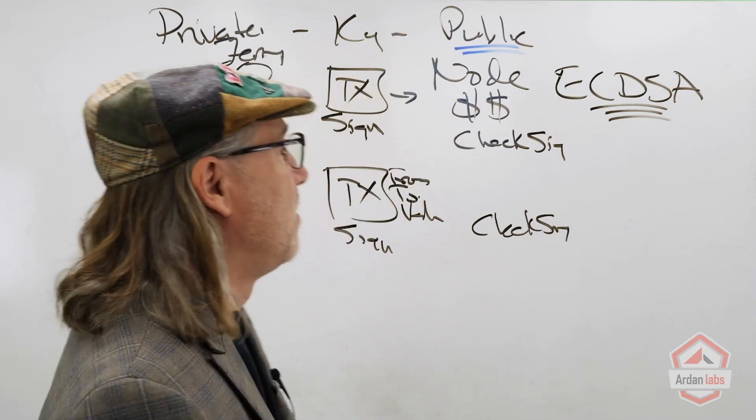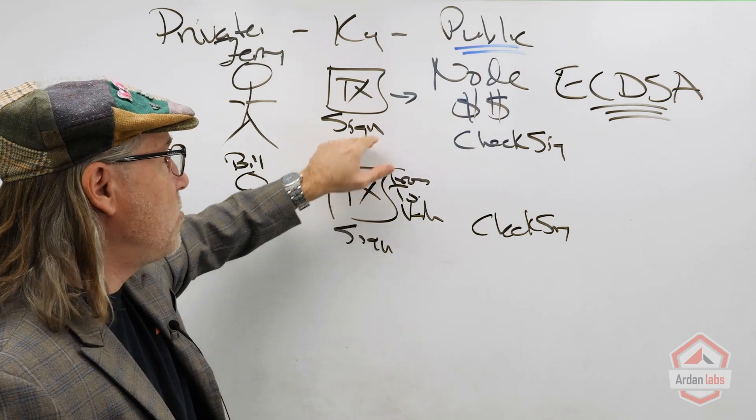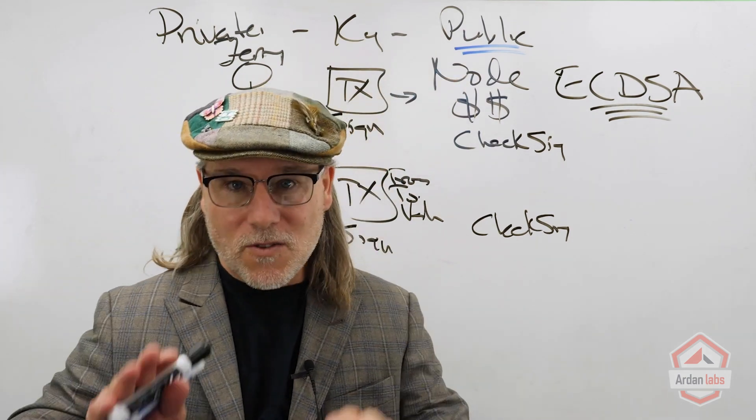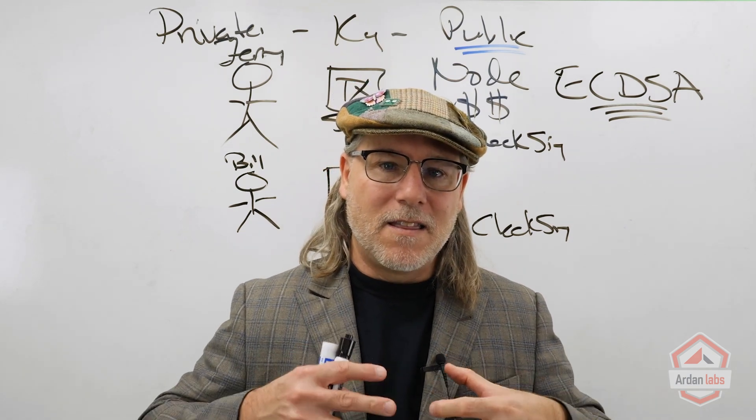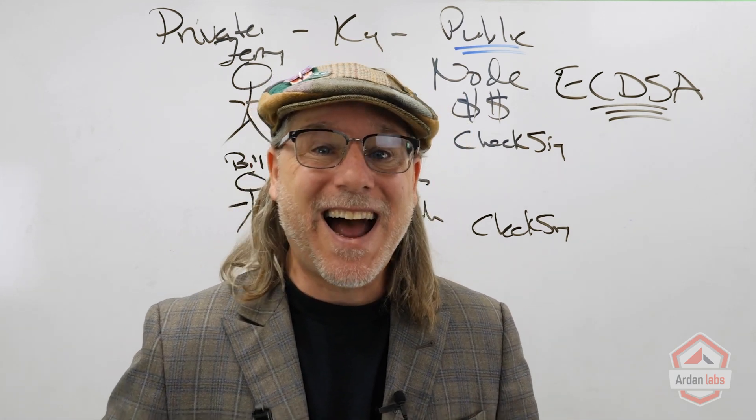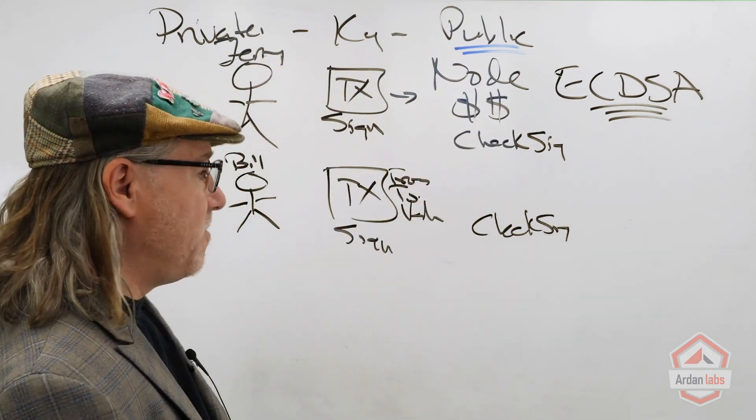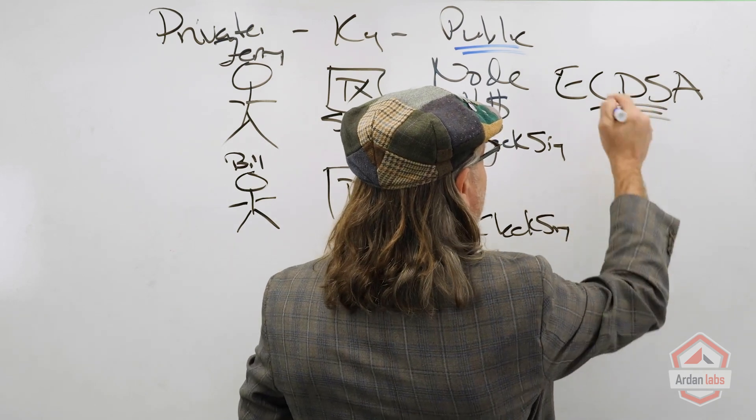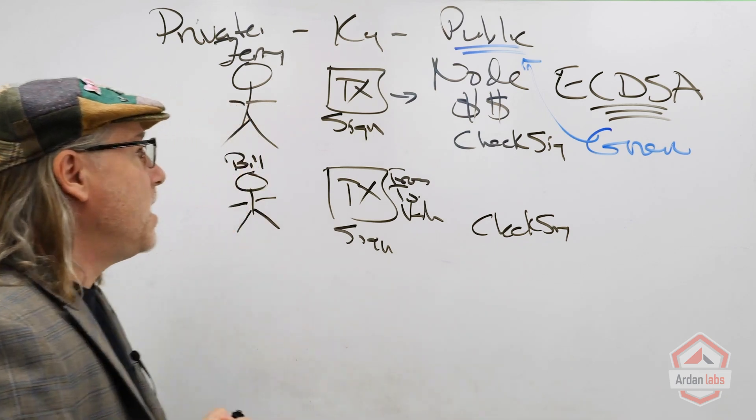So how is the node supposed to check a signature using your public key when it's not registered anywhere? This is the cool thing about ECDSA—this algorithm allows the node to calculate the public key on the fly. The algorithm is going to allow us to generate the public key based on the data that we send in.